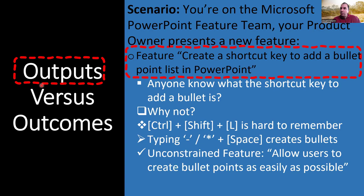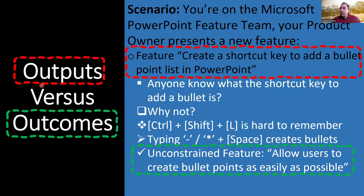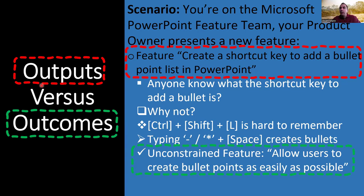What I want to illustrate is the difference between these two feature descriptions. The top one: 'Create a shortcut key to add a bullet point list in PowerPoint.' The bottom one — an unconstrained feature: 'Allow users to create bullet points as easily as possible.' They seem very similar but there's a subtle difference. The top one in red is just an output — I'm coming with the solution already decided, essentially saying: don't think, just do this.